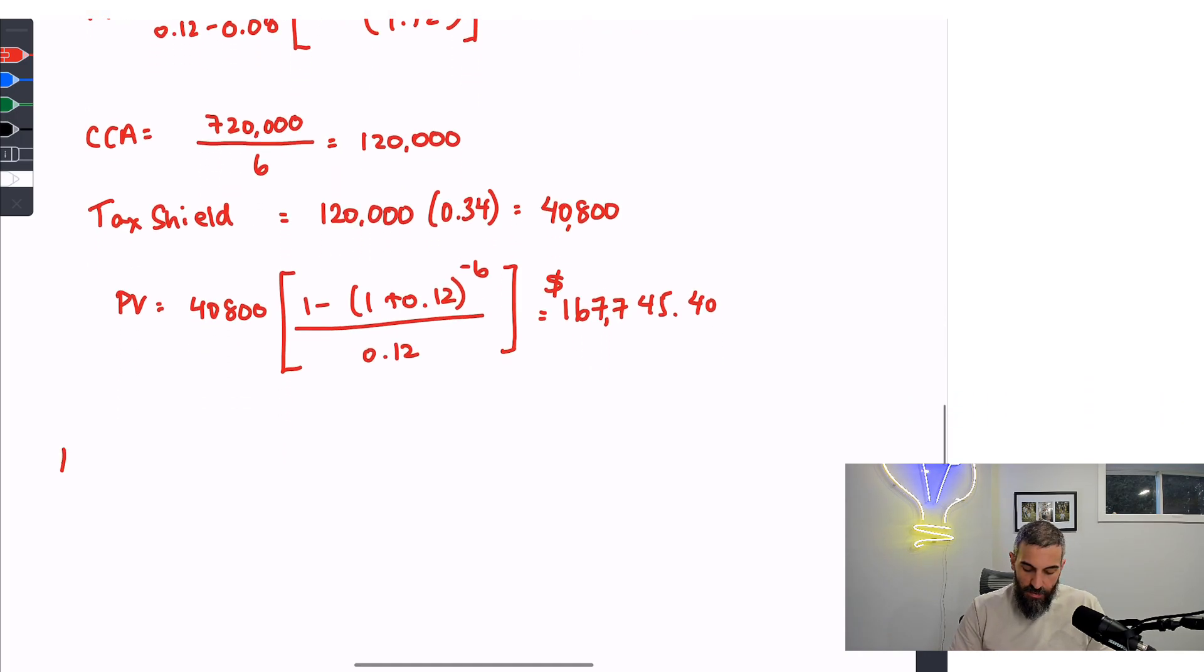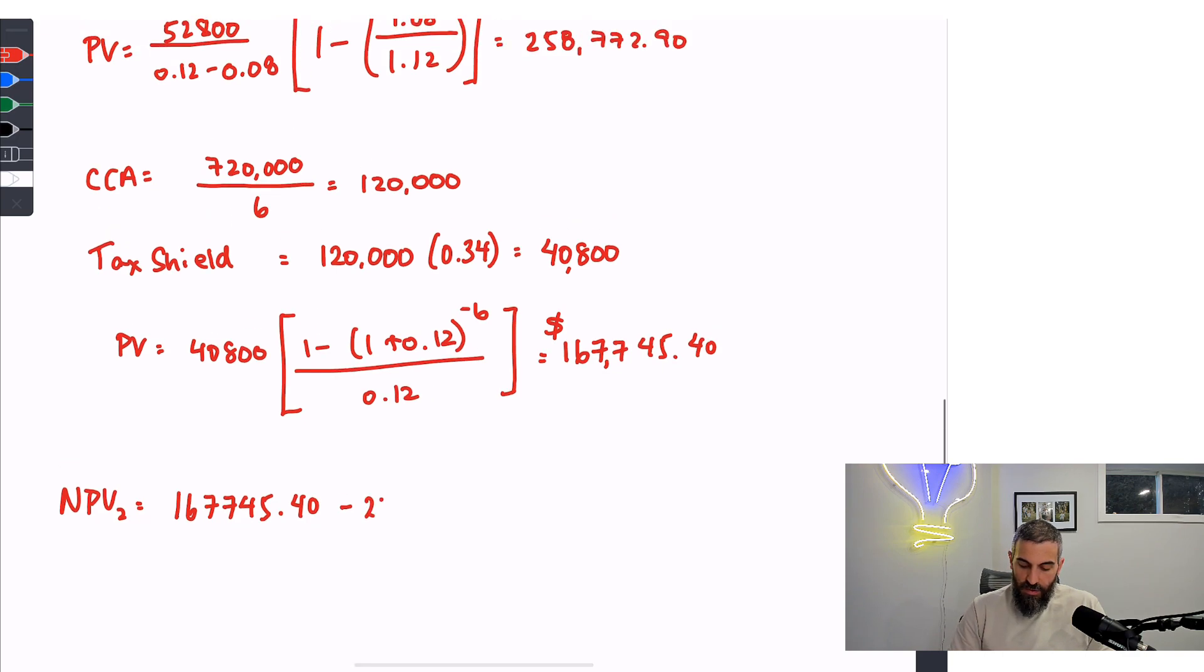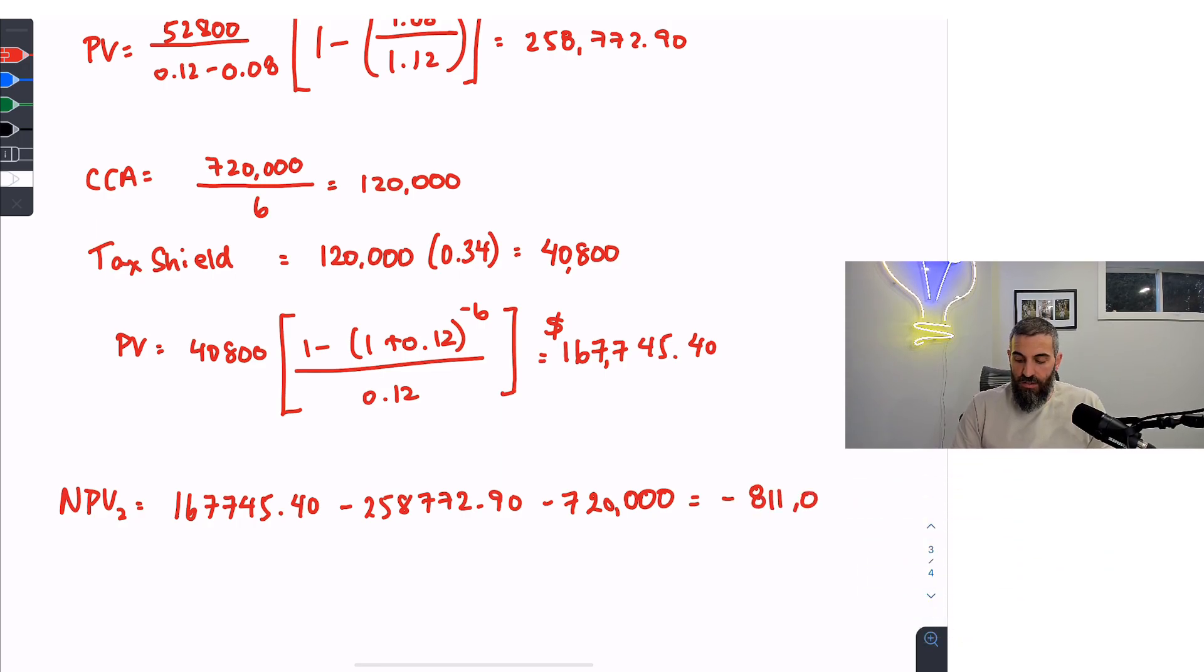So now the NPV for machine number two would be the $167,745.40 that we received in tax savings minus the $258,772.90 for the operating cost minus $720,000 for the purchase price of the machine. So a net present value of $811,027.50.